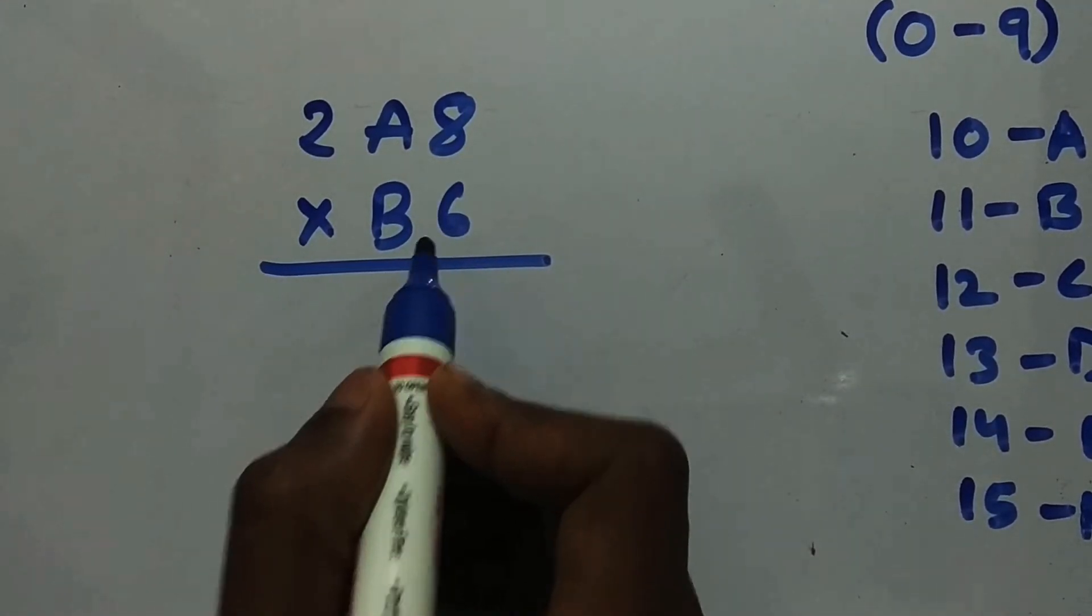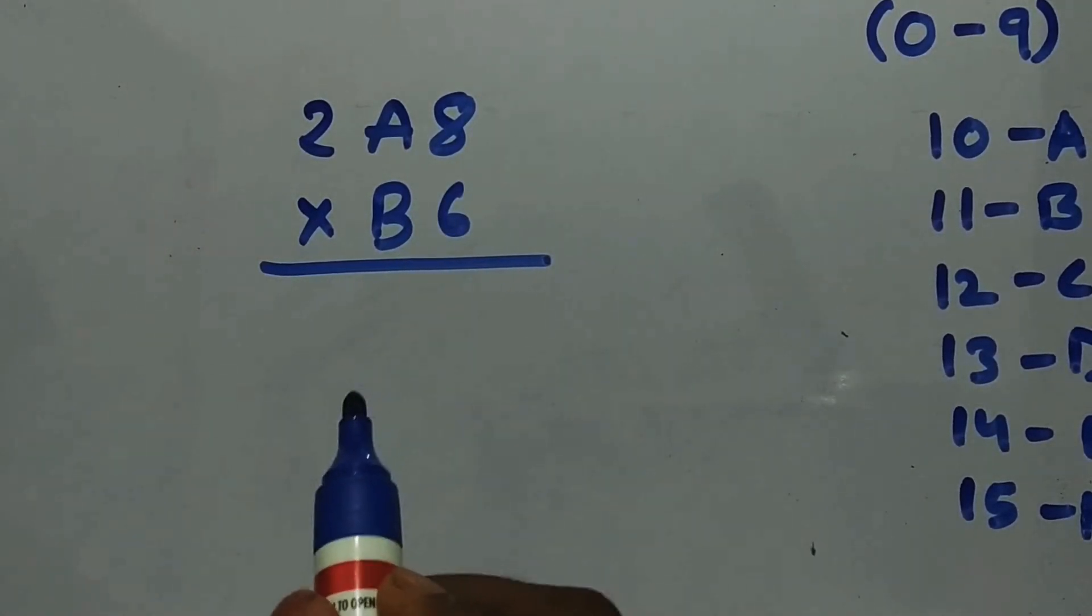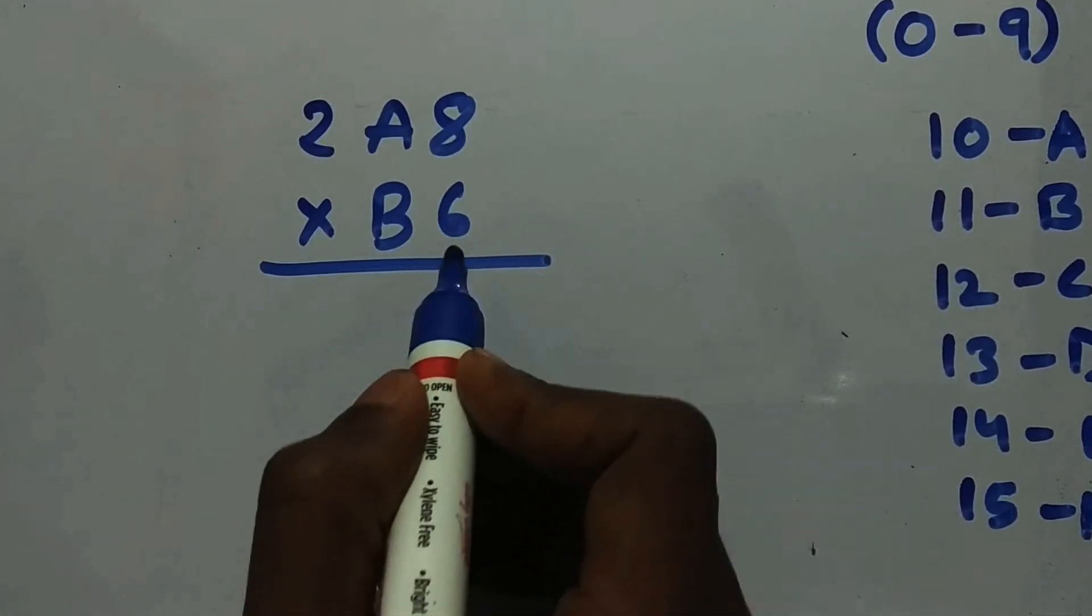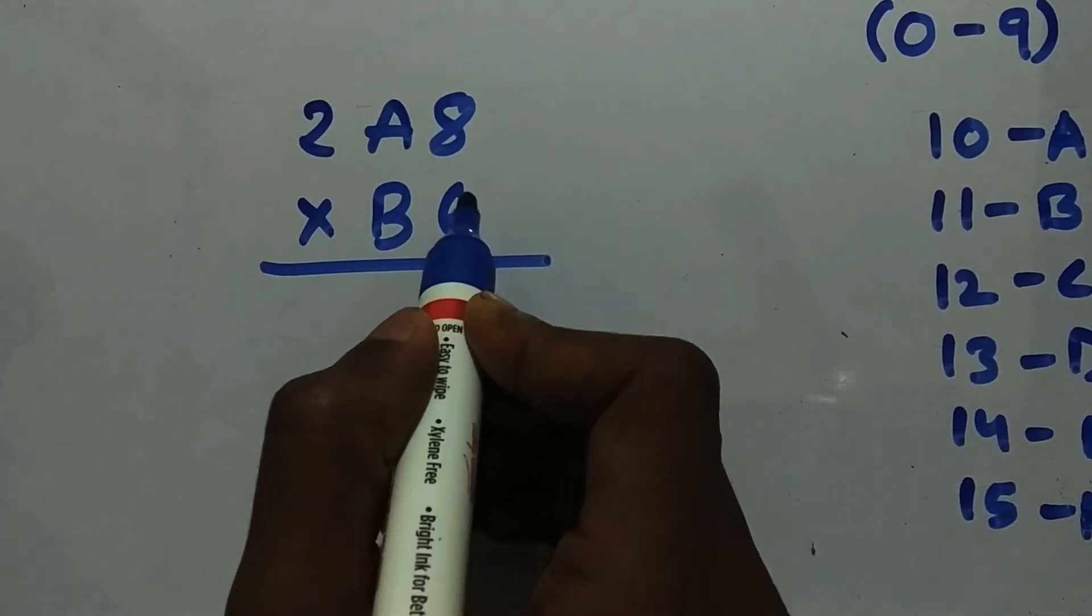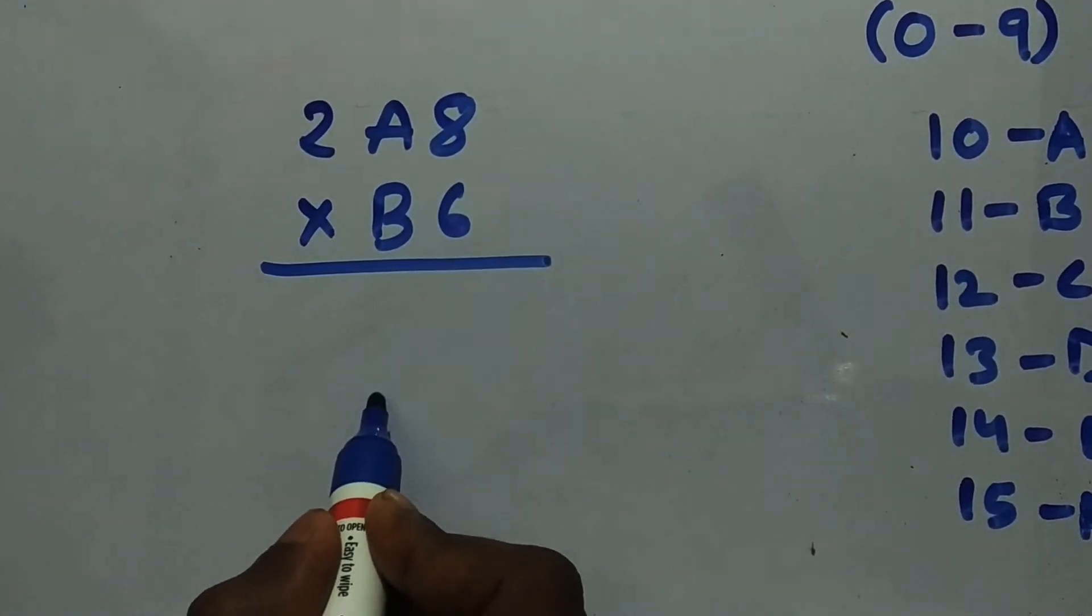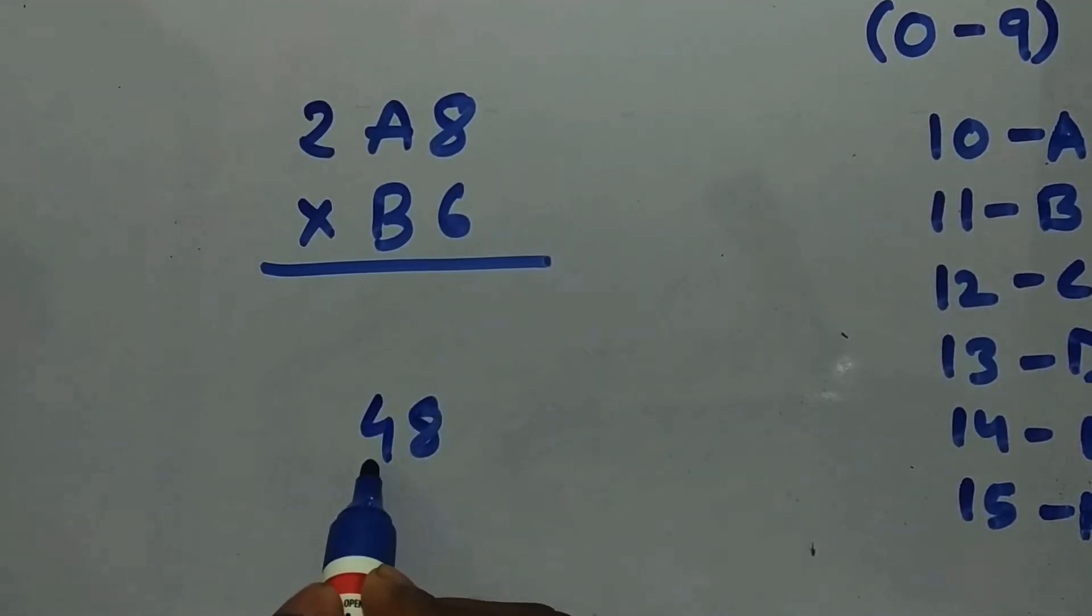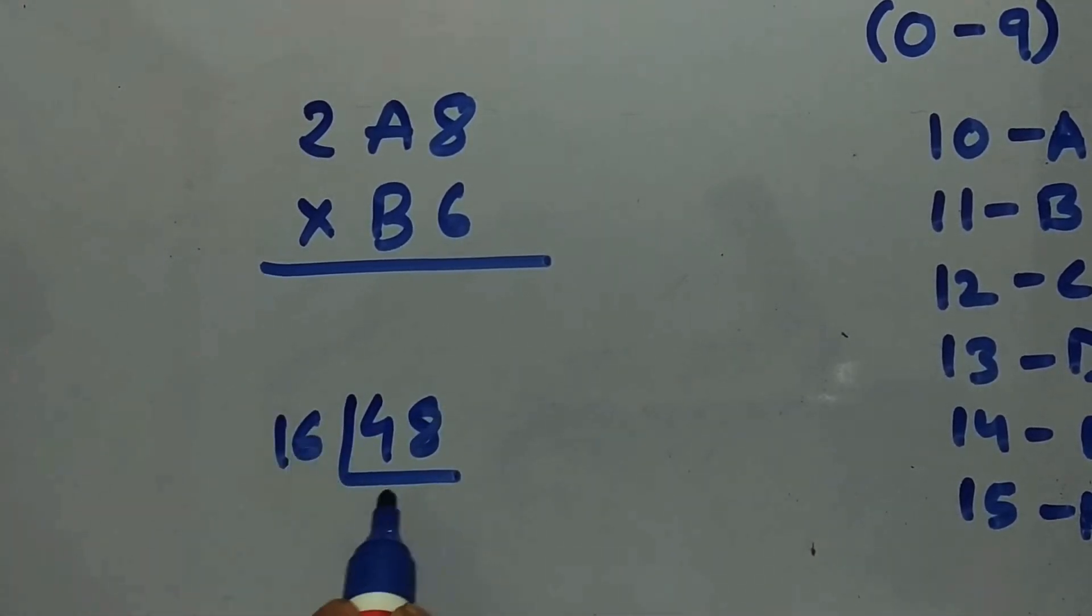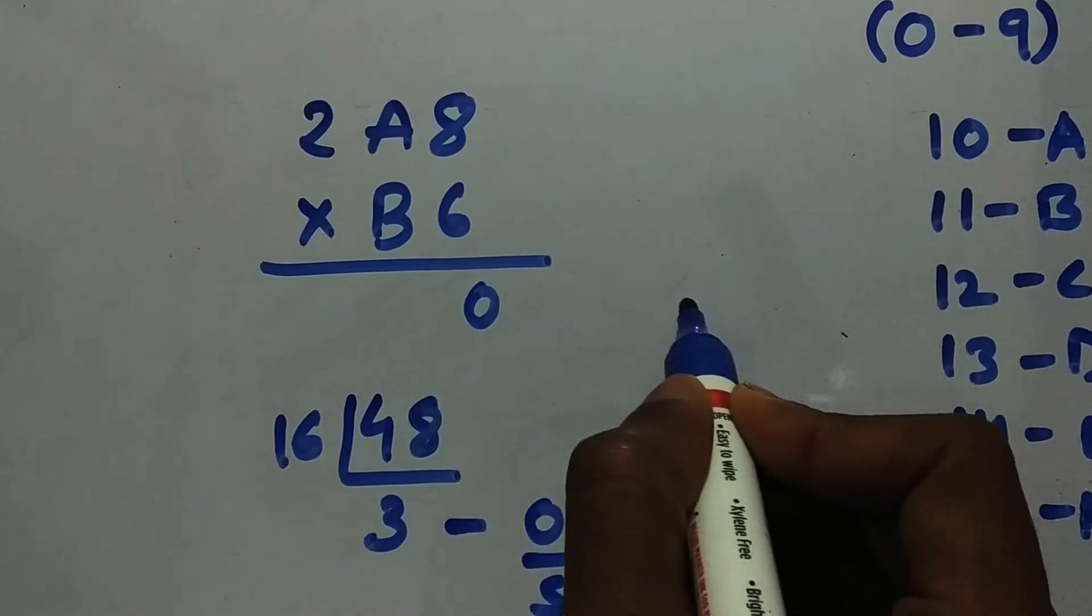After multiplying with decimal value we need to convert into hexadecimal. Let's start with 6 first. Six times 8 is 48. We need to convert 48 into hexadecimal. 16 times 3 is 48, so remainder is 0. This sum will be written over here and carry will be taken for the next sum.